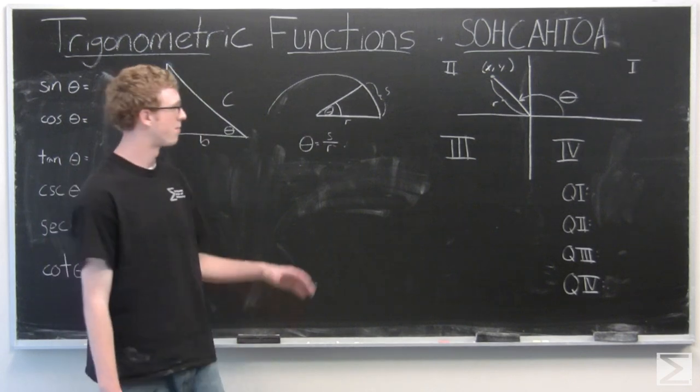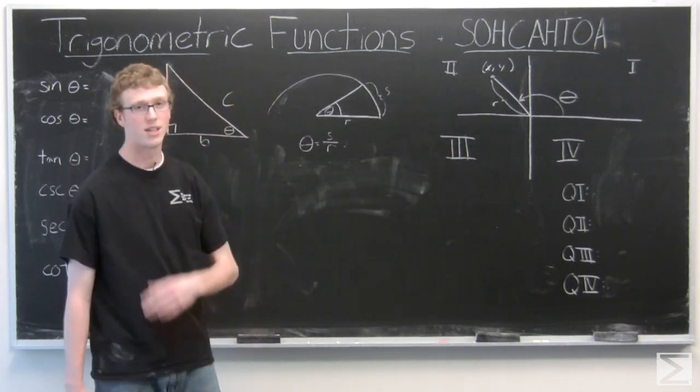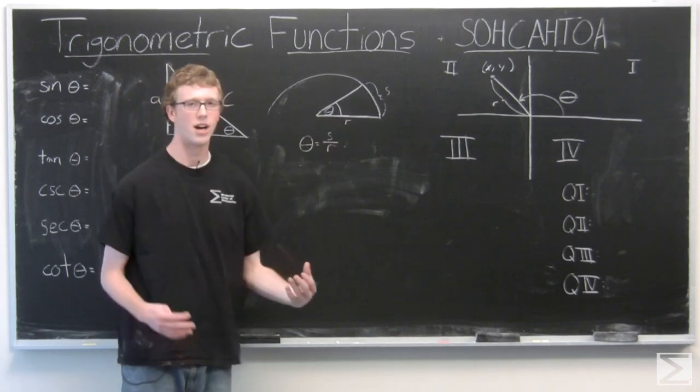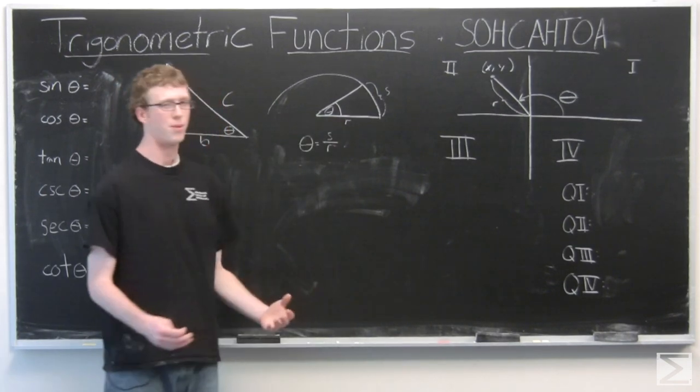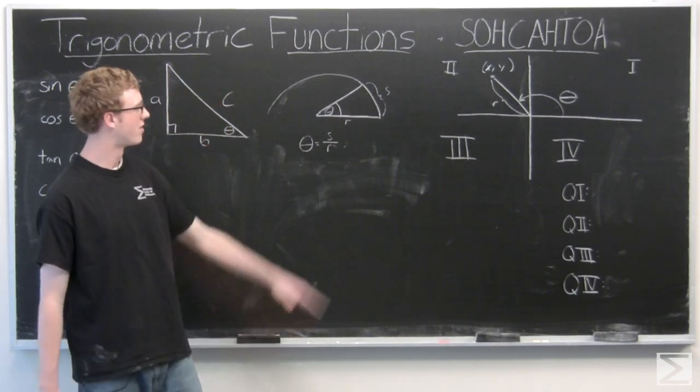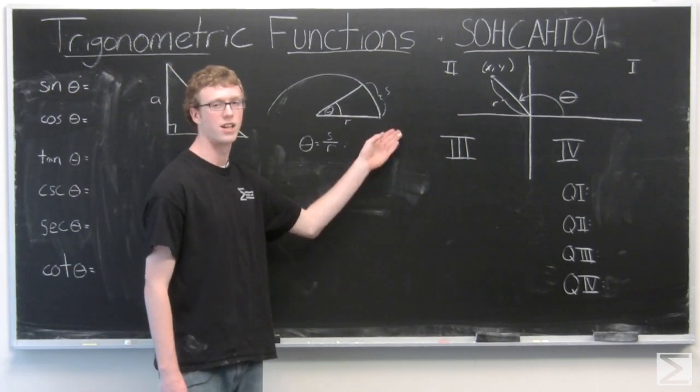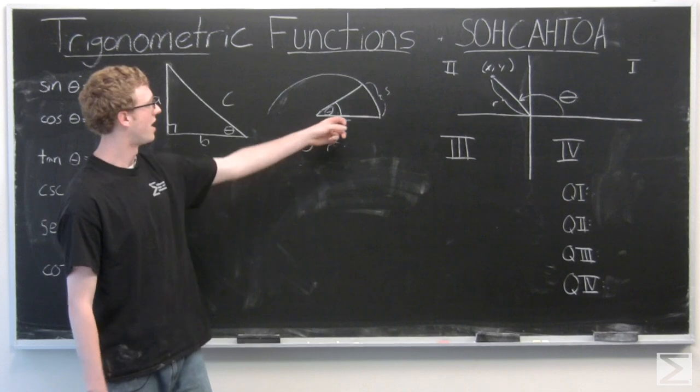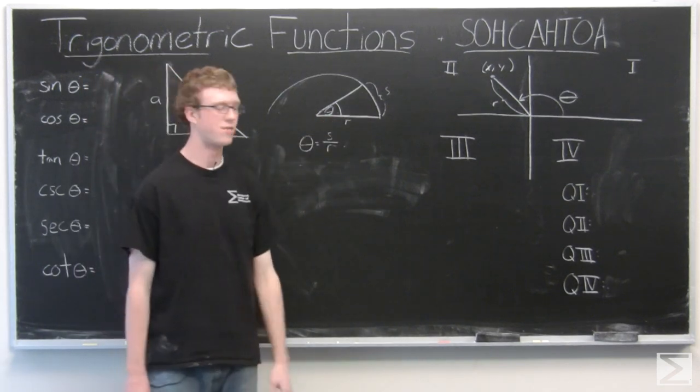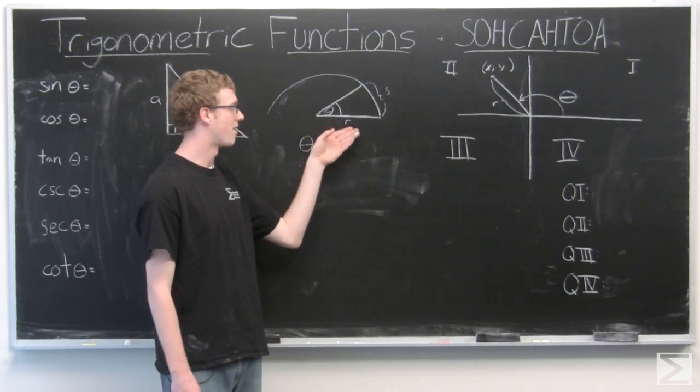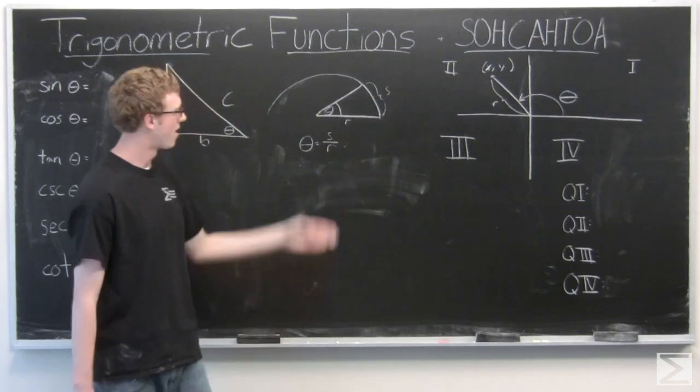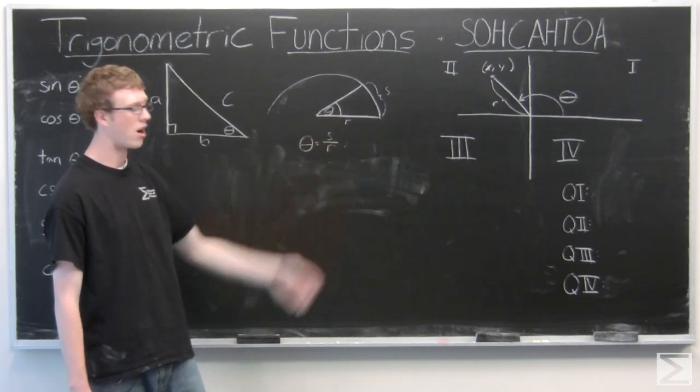Before we start, please ignore all this crazy writing on the board around me and consider this half circle. It's supposed to be a full circle, but we only have room for half circle. And so we have an angle in this half circle, theta. The arc length that theta cuts out and r, the radius of the circle, and we define theta in relation to that arc length and that radius. Theta equals s over r.